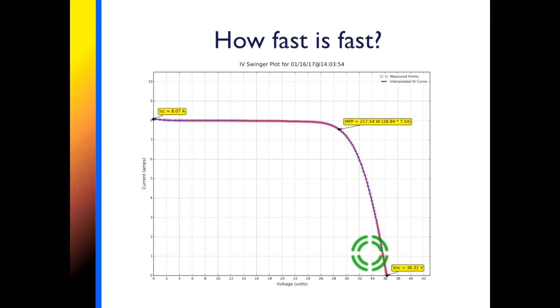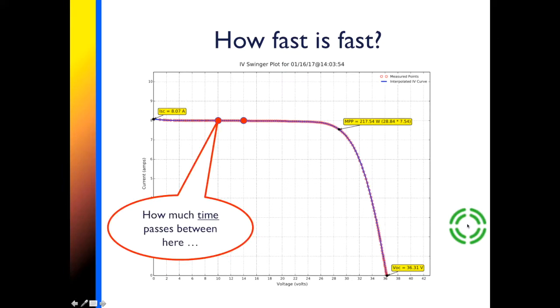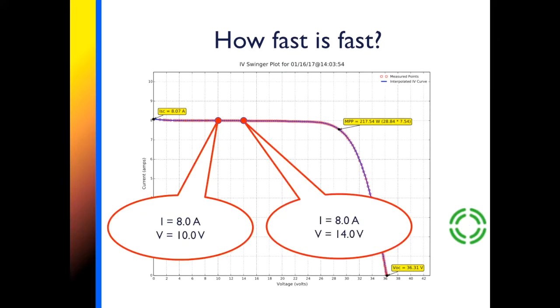So how fast do the measurements have to be taken? Let's take two points on a real IV curve, here and here. How much time passes between the first and the second? We can read the current and voltage of these two points directly off the graph. And the question is now how can we calculate the time difference, delta T, between those two points.